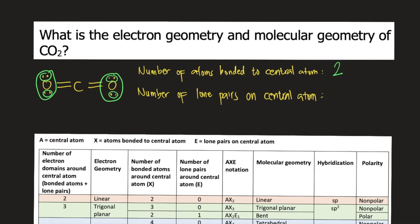Now, count the number of lone pairs on the central atom. Do you see pairs of dots around carbon? There is none. So there are zero lone pairs around carbon.